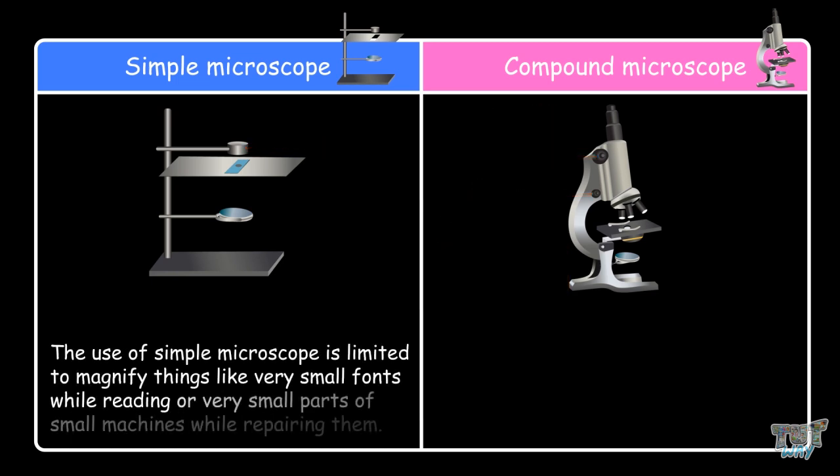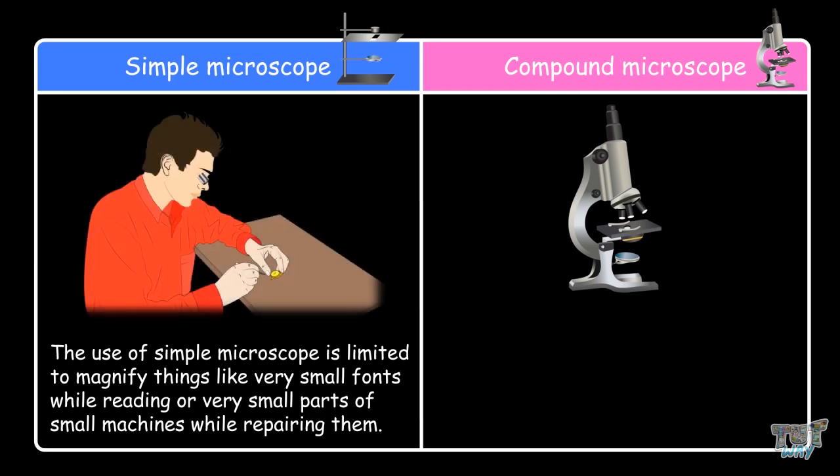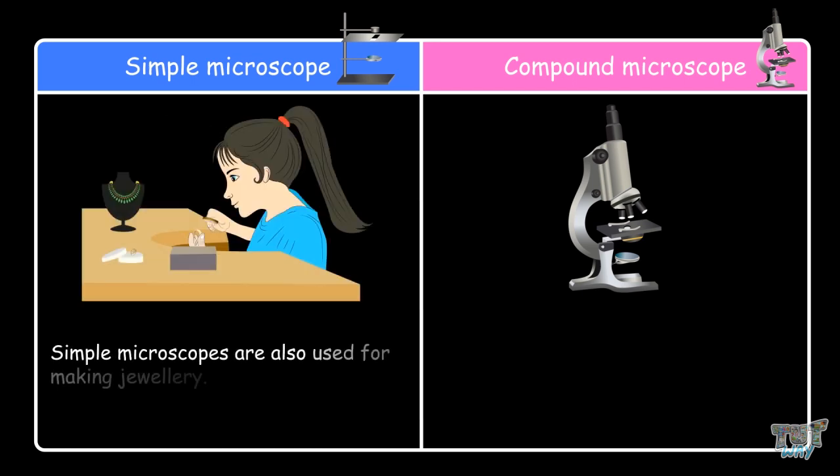The use of a simple microscope is limited to magnifying things like very small font while reading or very small parts of small machines while repairing them. It can also be used while making jewelry.